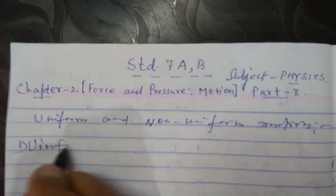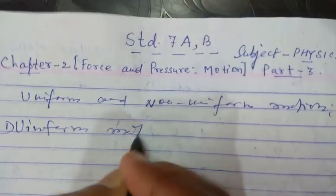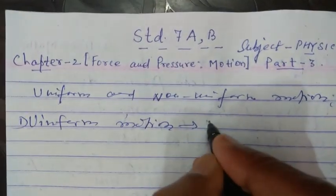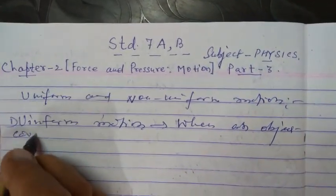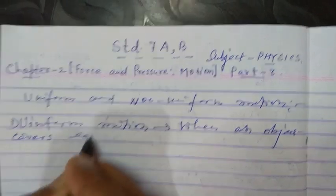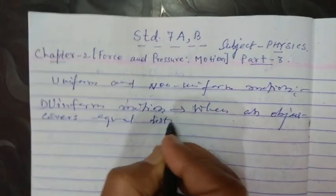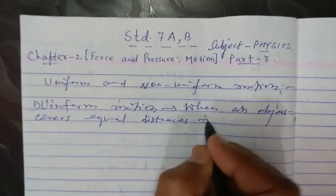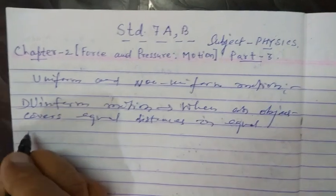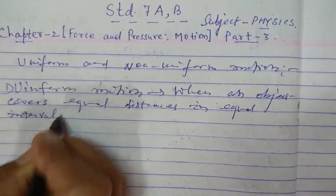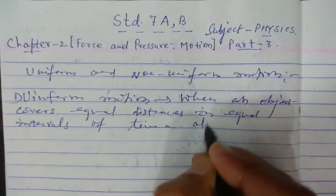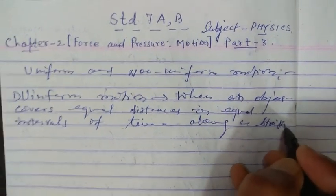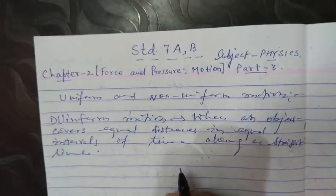First is Uniform Motion. When an object covers equal distances in equal intervals of time along a straight line, the object is said to be in uniform motion.